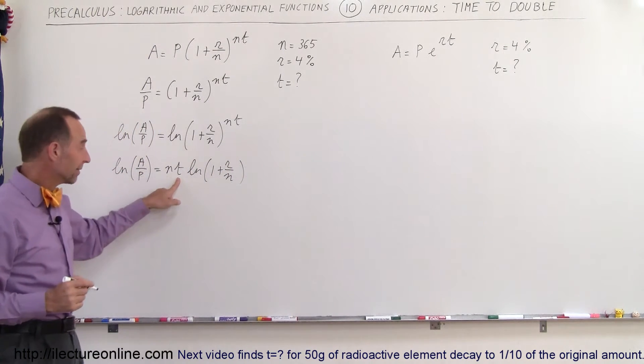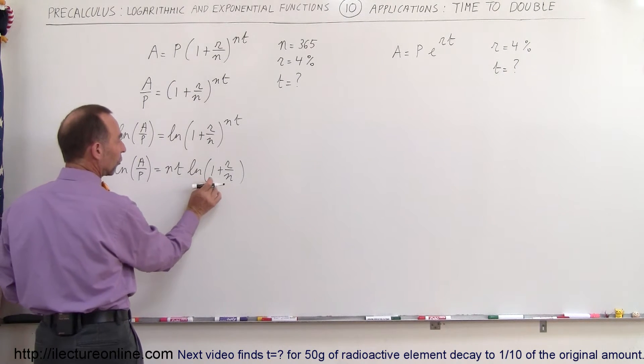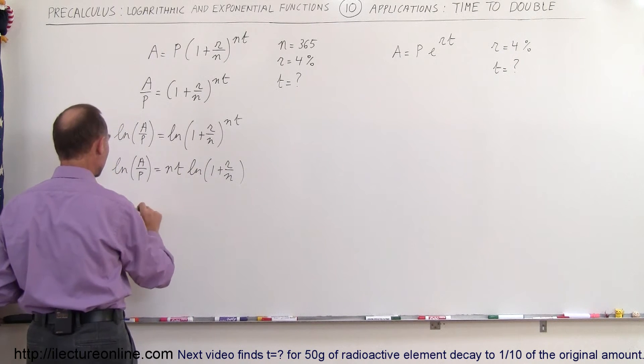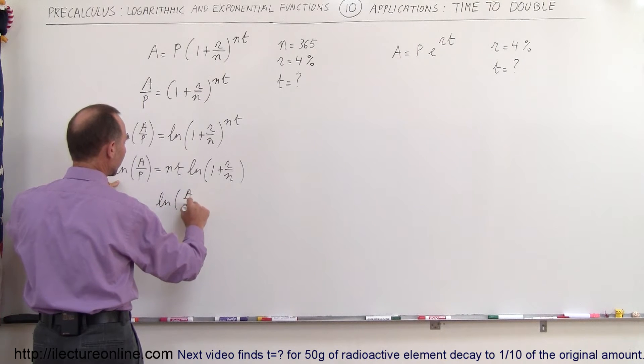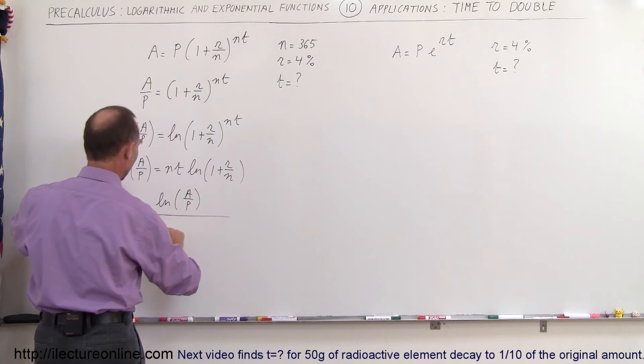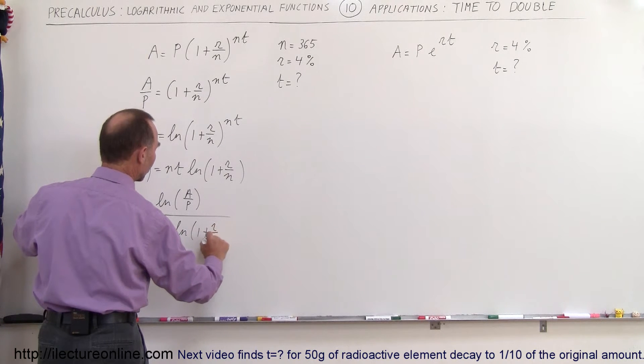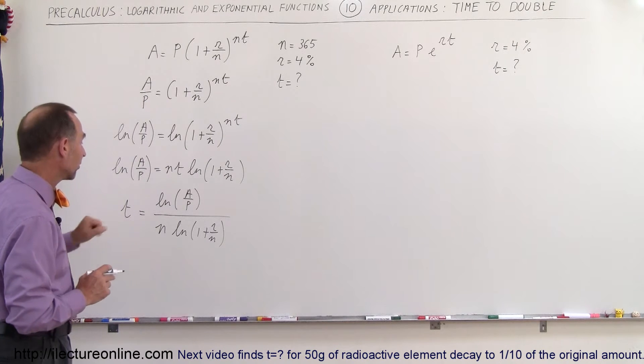And finally when we isolate the t right here, so we're going to divide both sides equation by n times the natural log of 1 plus r over n and we turn the equation around, we get t is equal to the natural log of a over p divided by n times the natural log of 1 plus r over n. Now we just plug in the values that we want, we can solve for the time.